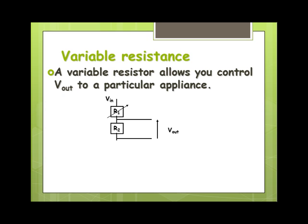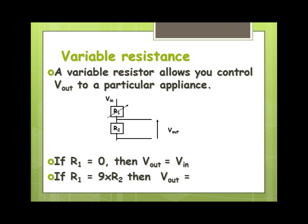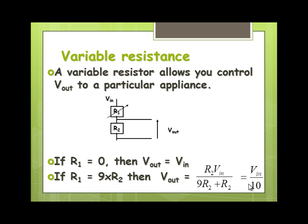If we wind the variable resistor down to zero resistance, V_out equals V_in — there will be no voltage across R1. At the other extreme, if R1 is nine times that of R2, using the voltage divider equation: V_out = V_in × R2 / (R1 + R2) = V_in × R2 / (9R2 + R2) = V_in × R2 / 10R2. The R2's cancel, giving one tenth of V_in. This makes sense — R1 has nine times the resistance, so it gets nine tenths of the voltage, leaving one tenth for R2.